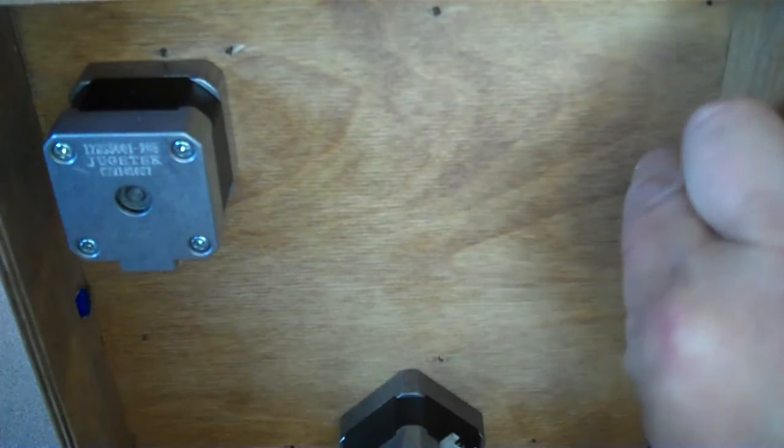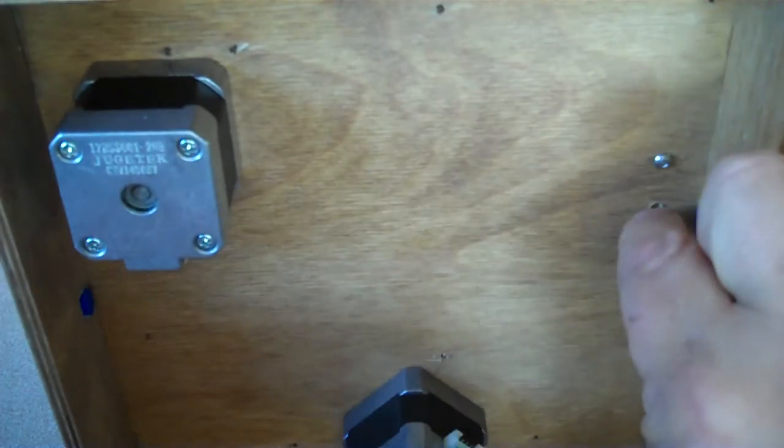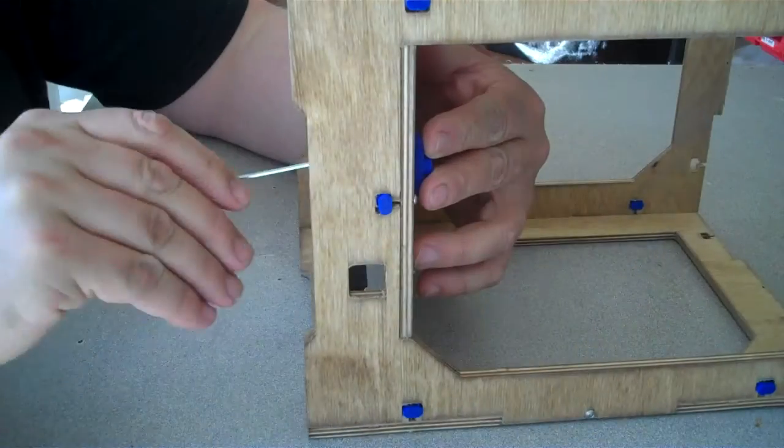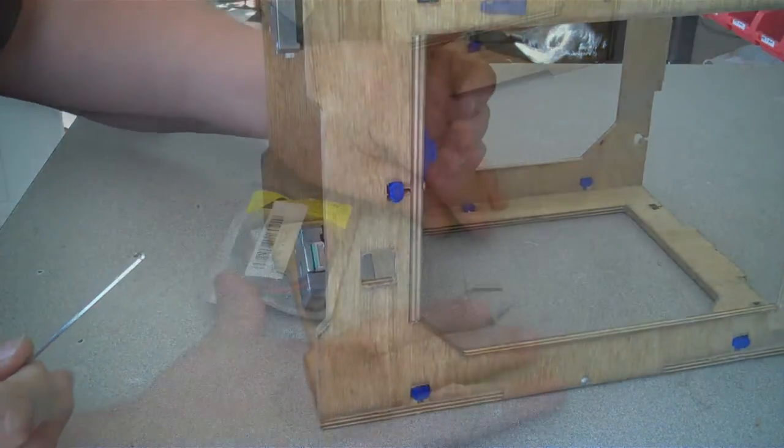On the opposite side of the printer, insert two M3 by 12 millimeter screws. These two screws should be tightened into the nylon locking nuts that are embedded in the remaining Z rod holder.